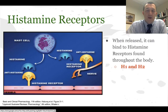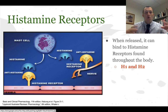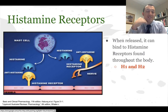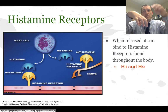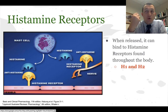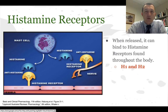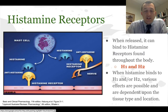Throughout the body on various cell types there are histamine receptors. When histamine is released from the mast cell, it will bind to that receptor and trigger a whole chain of events resulting in some type of tissue response. An antihistamine essentially blocks that receptor so that when histamine comes floating in, it can't actually bind. There are four main types of histamine receptors: H1, H2, H3, and H4. H3 and H4 are less of a clinical concern - the ones that are mostly clinically applicable are H1 and H2.